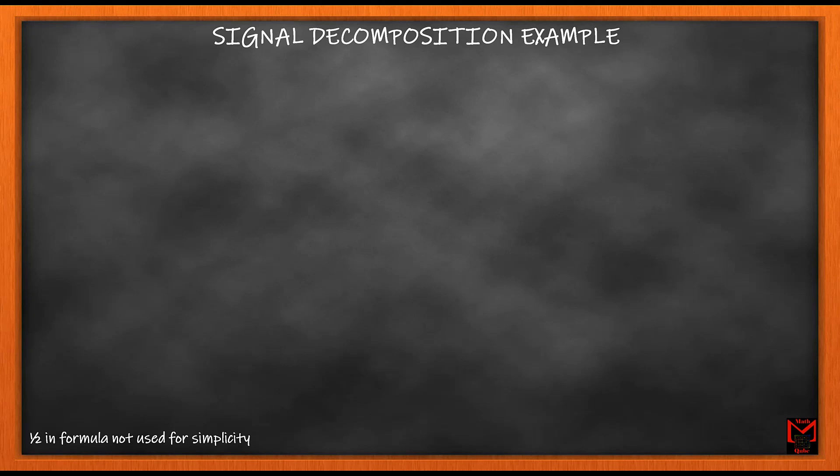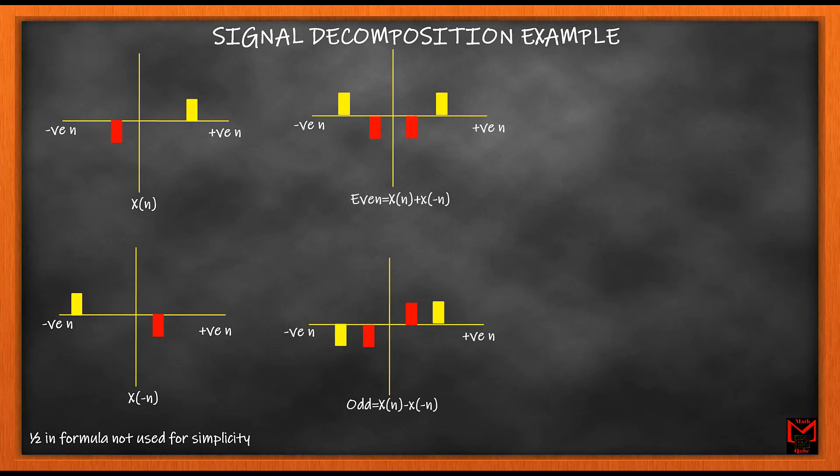An example of signal decomposition is shown here. For the given x(n), we take x(-n) along the horizontal axis as that is the axis which we use for n. From that we get the even signal as x(n) + x(-n) and the odd signal as x(n) - x(-n).